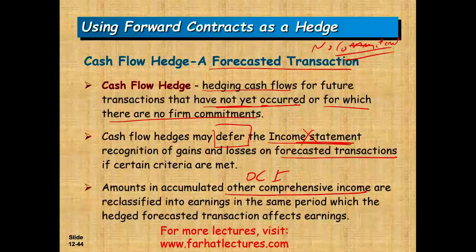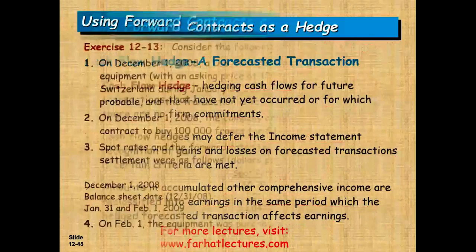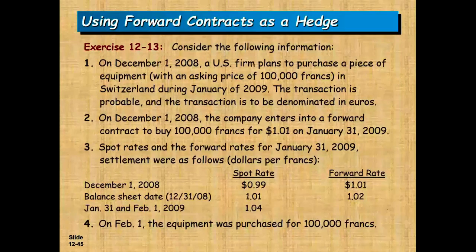If it's a cash flow hedge and we have a gain or a loss, it's not going to go on the income statement yet. It's going to go first into OCI — other comprehensive income. The amounts are accumulated in OCI, then reclassified into earnings in the same period in which the hedged transaction affects earnings, which is when we actually have the transaction happen.